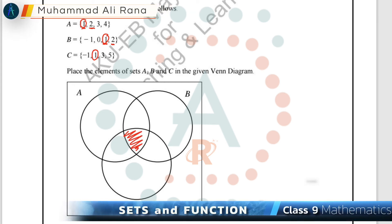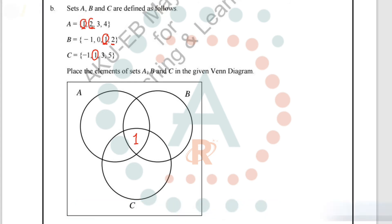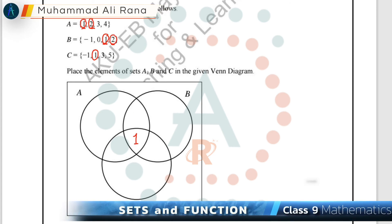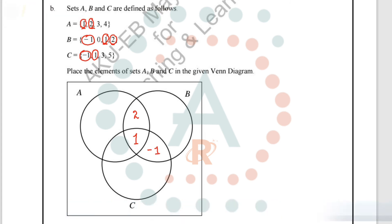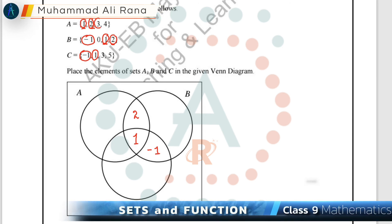The central region where all three circles overlap represents 1. Next, the common element in A and B only is 2, so we place 2 in the A∩B region. The common element in B and C is -1, so we place -1 in the B∩C region. The common element in A and C is 3, so we place 3 in the A∩C region.